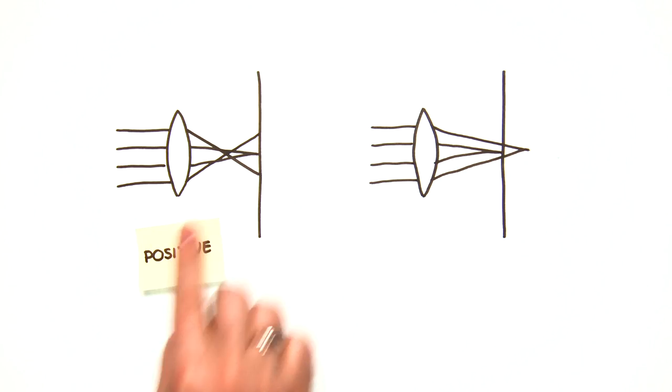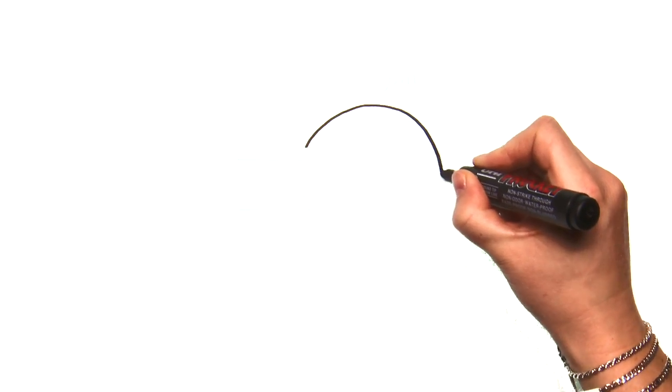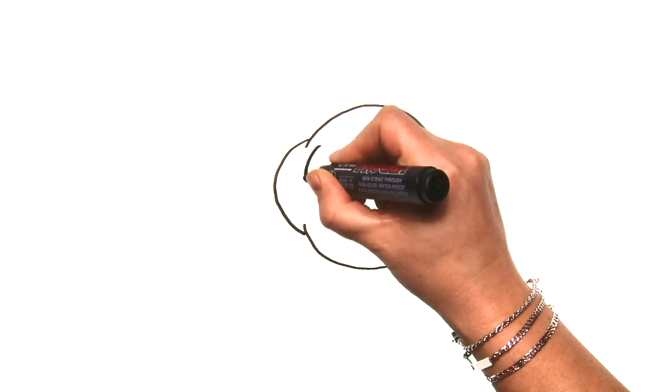In positive spherical aberration, the rays are focused in front of the focal point. In negative spherical aberration, the rays are focused behind the focal point. Spherical aberration in the eye is caused by the cornea and the crystalline lens.